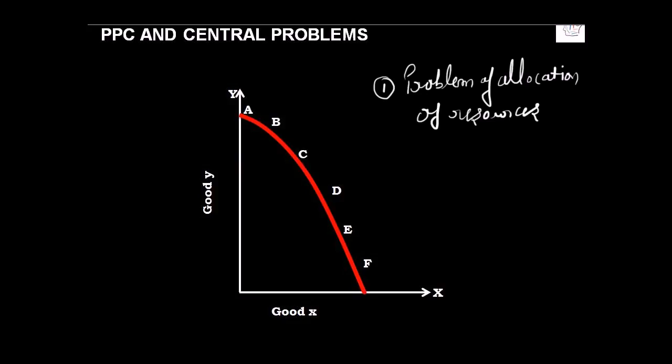Let us discuss how PPC allows you to solve central problems. The very first problem that you can solve or analyze better with the help of the Production Possibility Curve is the problem of allocation of resources. PPC represents various combinations of two goods that an economy can produce with given resources and technology, and it also shows how resources are exactly allocated.